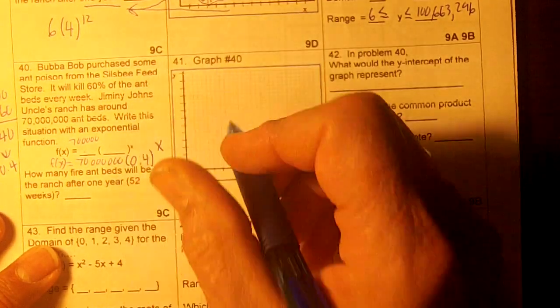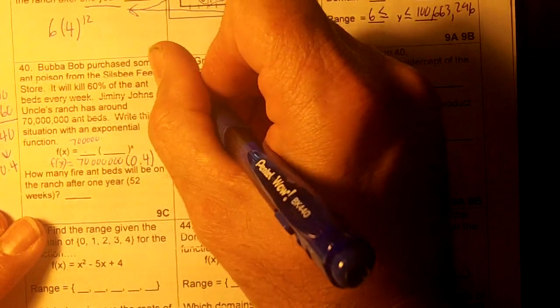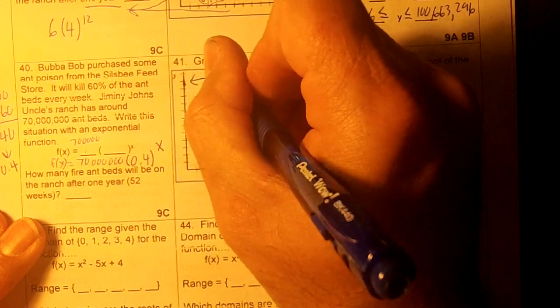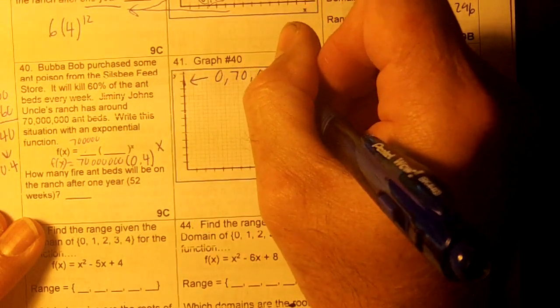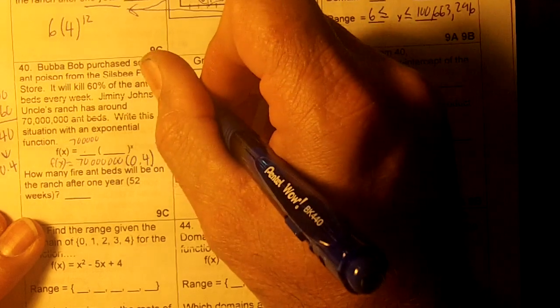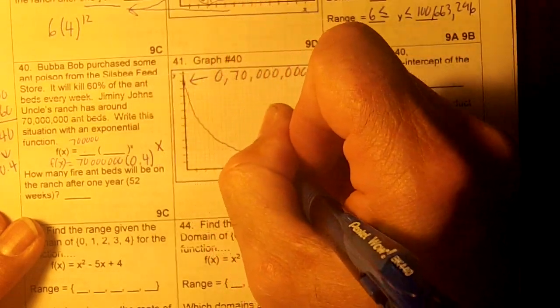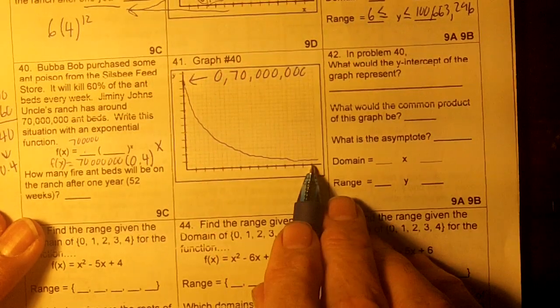So this right here would be our function. So it's going to start at 70 million, so 0, 70 million. And this graph would just barrel down like this, right? And eventually go to the x-axis.